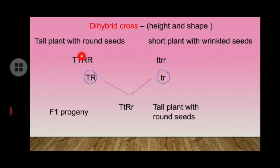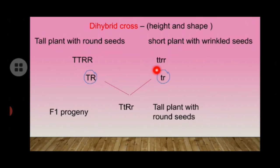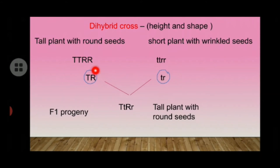The genotype for the tall plant with round seeds is TTRR (capital T, capital T, capital R, capital R). The genotype for the short plant with wrinkled seeds is ttrr (small t, small t, small r, small r). The possible gametes are TR and tr respectively.